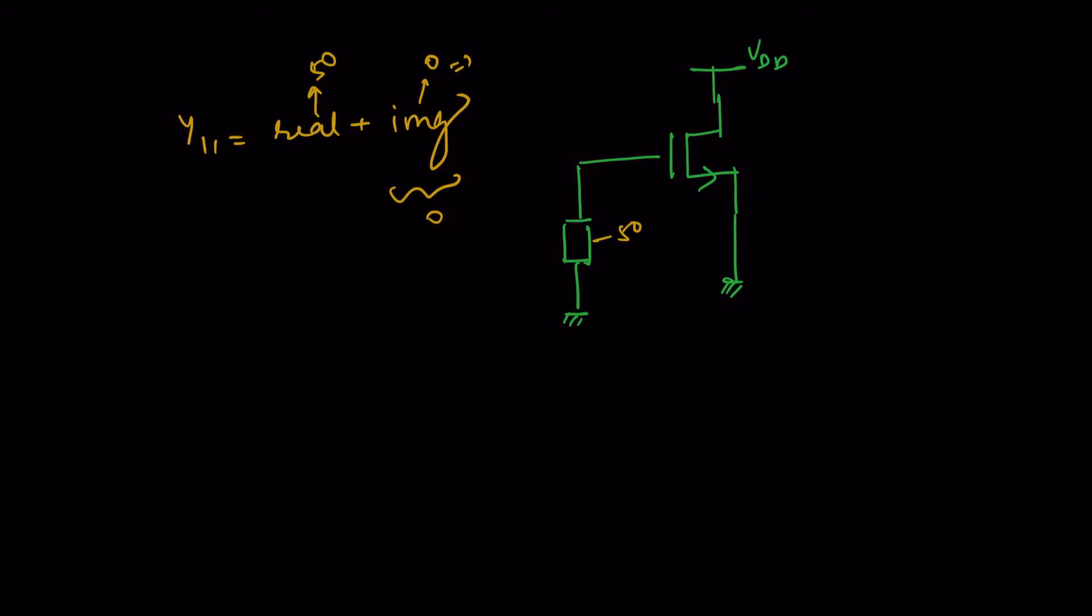Suppose C is present. XC is equal to 1 by omega C. So from here, the value of capacitance will be equal to 1 by omega XC, that is nothing but YC over omega. So what is this YC? This YC is that non-zero value, that imaginary part. And how will we calculate this? We will get this using the SP analysis. If we do Y11, we will get this.